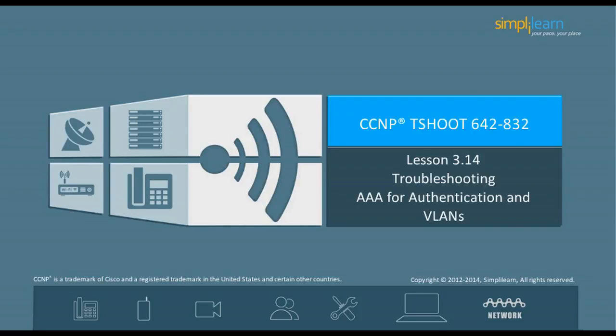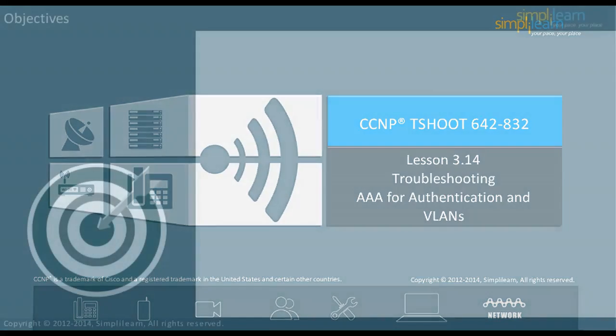Hello and welcome to the CCNP Routing and Switching course offered by SimpliLearn. The previous lesson focused on troubleshooting Internet Protocol version 6. In this lesson, we will focus on troubleshooting AAA for authentication and VLANs. Let us begin with the objectives of the lesson in the next slide.